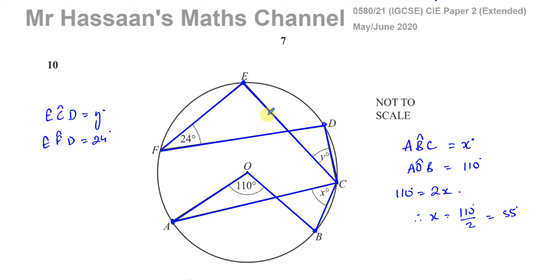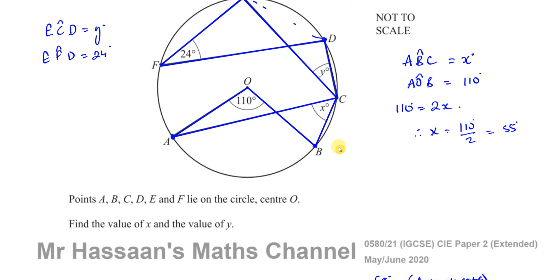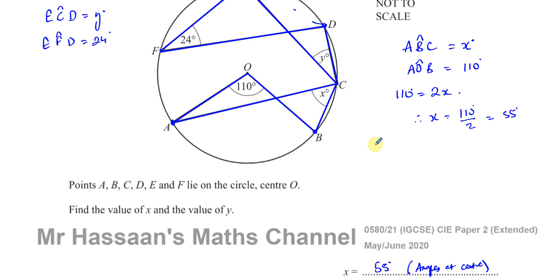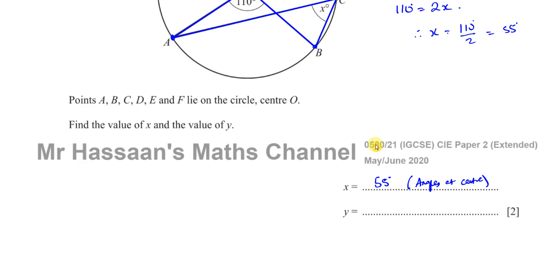Now, both of these two angles are standing on the same arc, and they're in the same segment. They're both in the same segment of the circle. This chord ED, two segments in this major segment. And they're both on the circumference this time. Angles, that means they're going to be equal to each other. Angles in the same segment, they call it. So Y is equal to the same as 24. So Y is equal to 24 degrees.